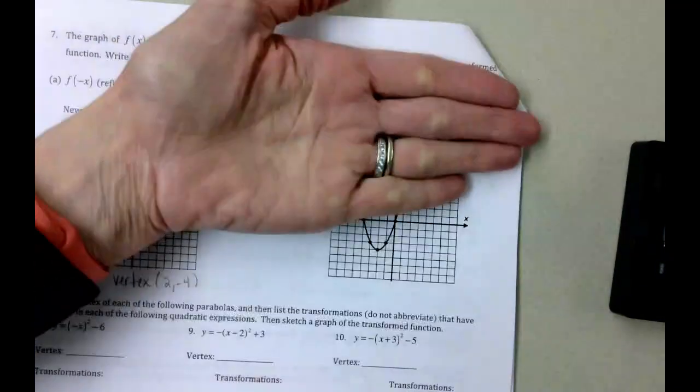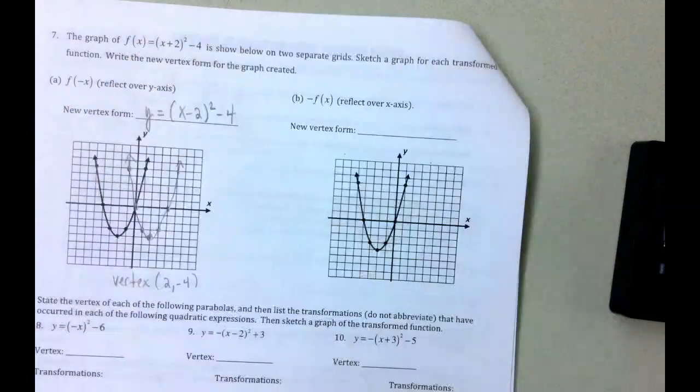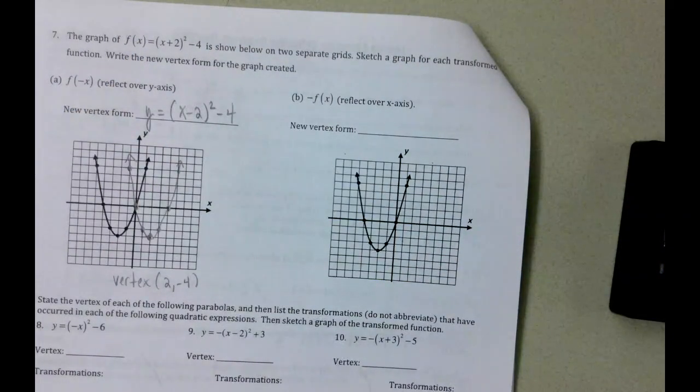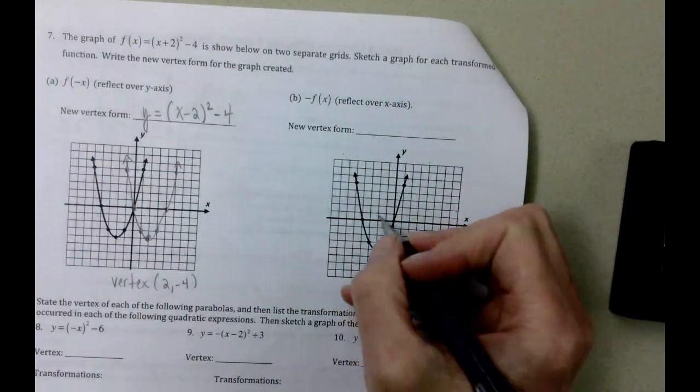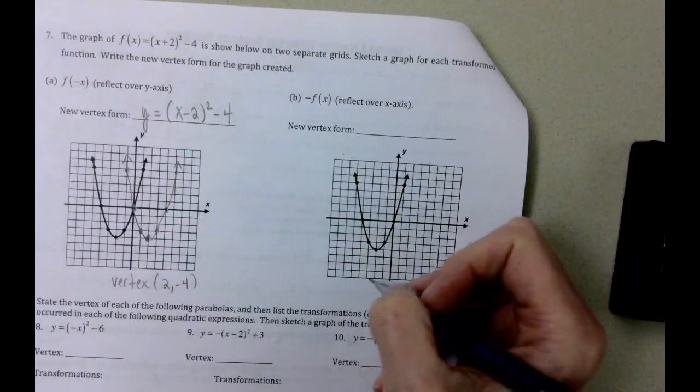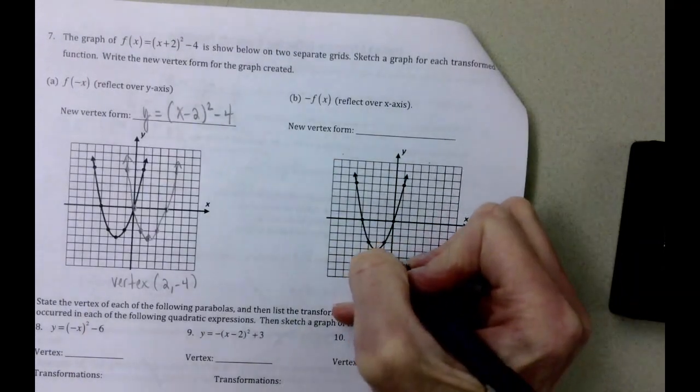We'll start here and flip it over. There we go. That's what we're going to do. We're going to reflect over the x-axis. So you're counting your points from the x-axis.